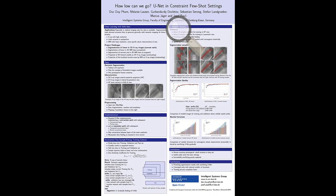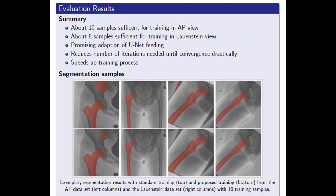Our findings are promising. For the anterior posterior view on the left, only 10 samples resulted in about 98% accuracy. And for the more stable inputs in Lauenstein view on the right, only 8 samples are sufficient for similar results.